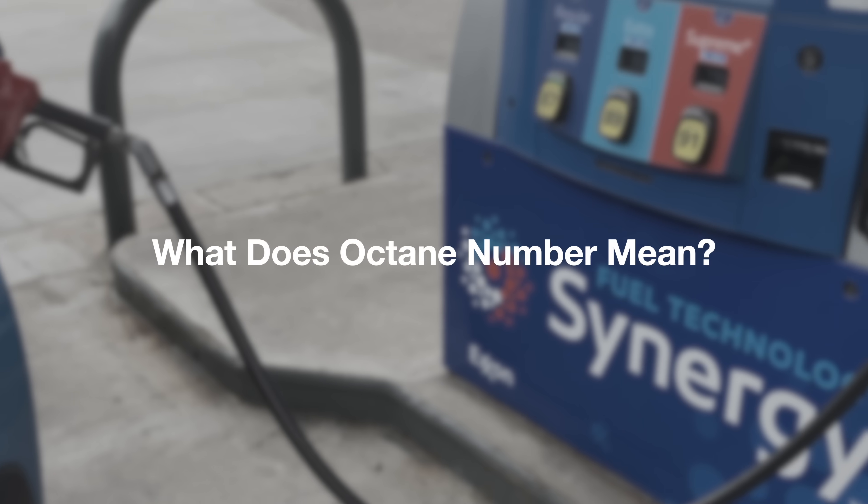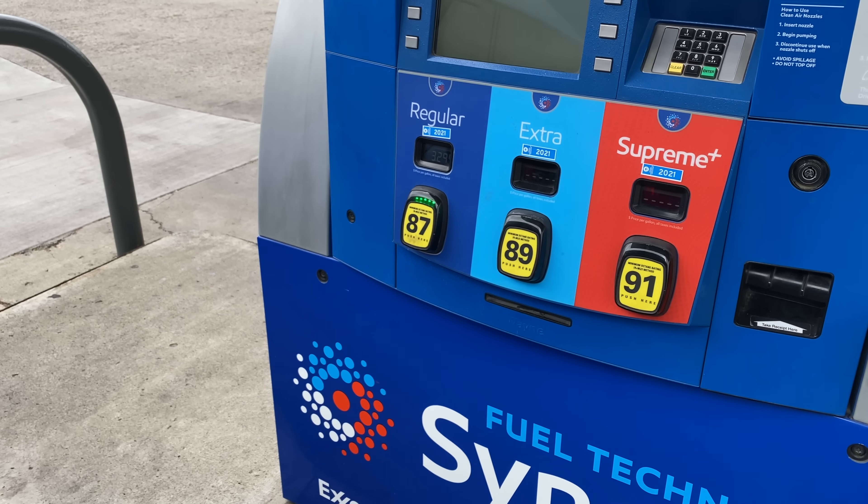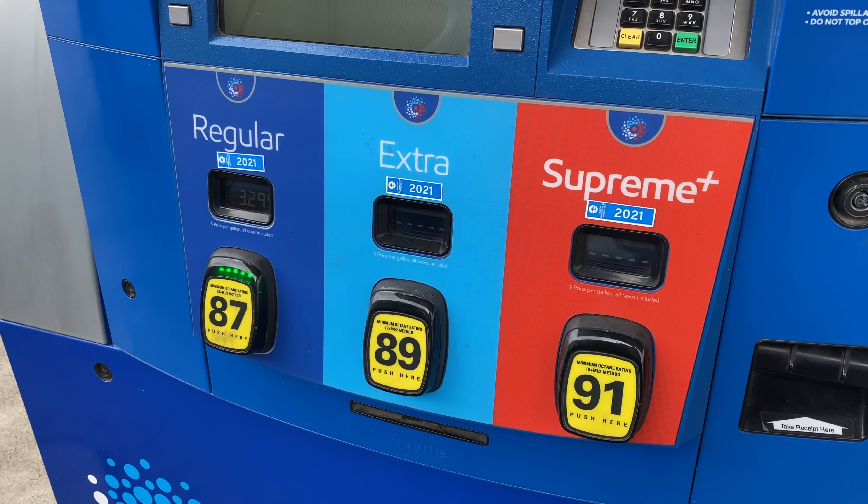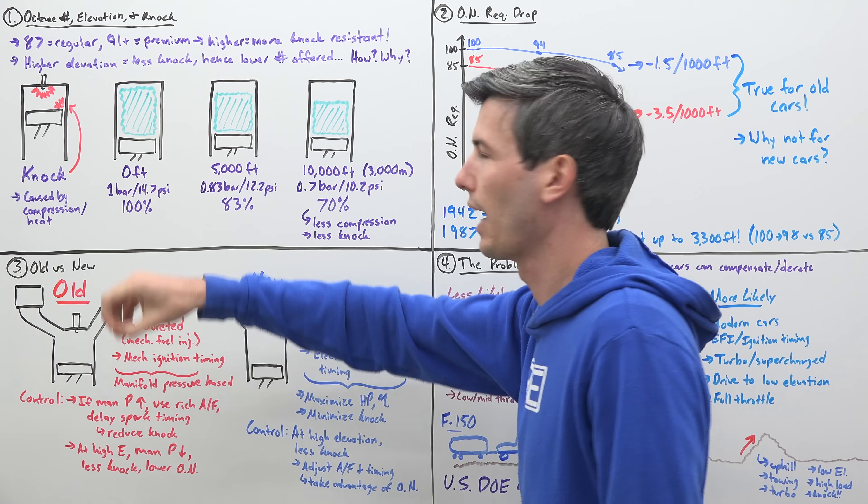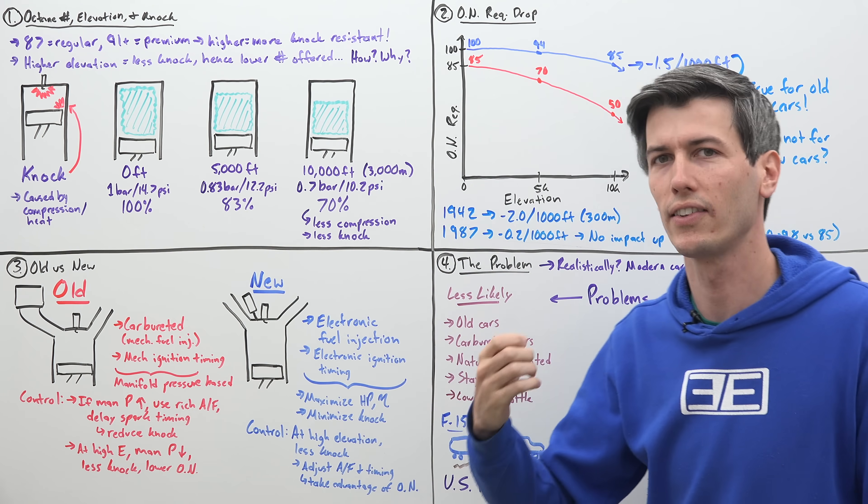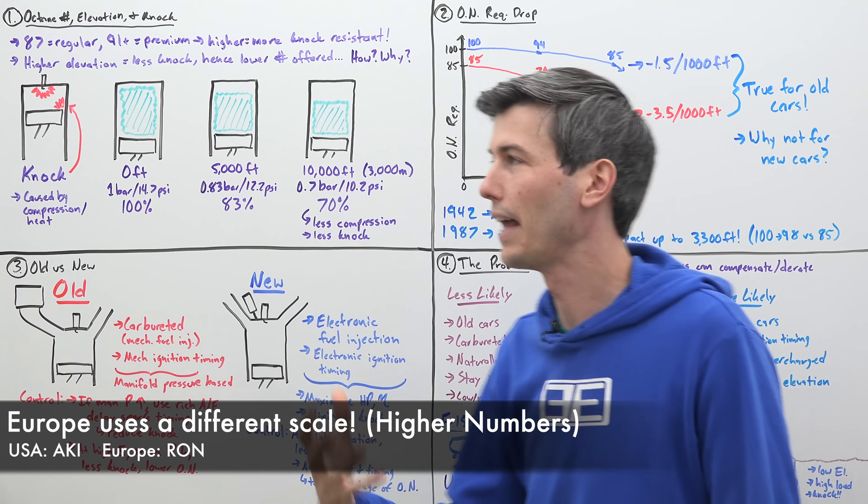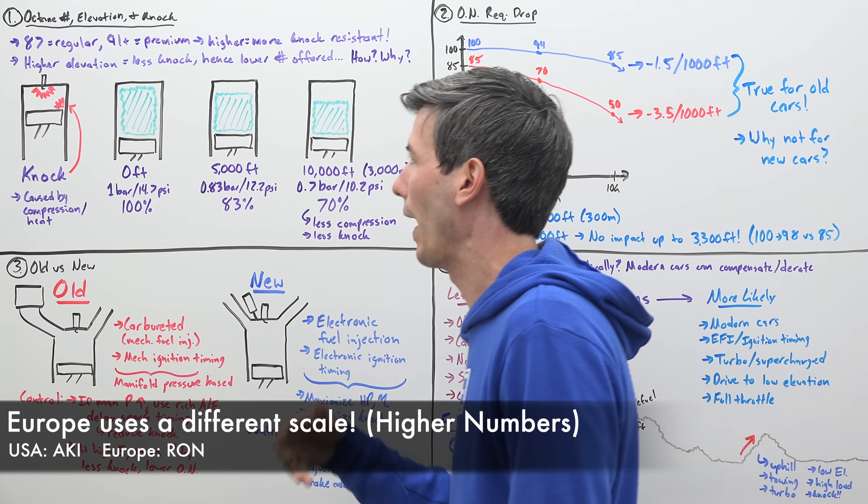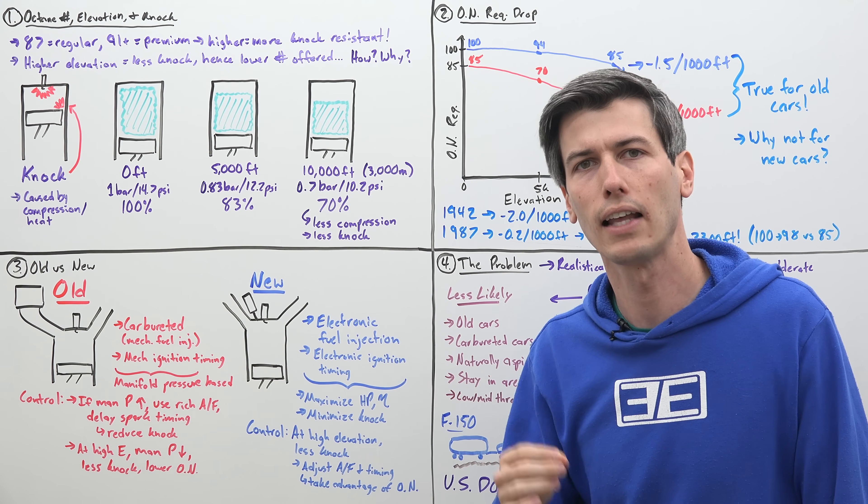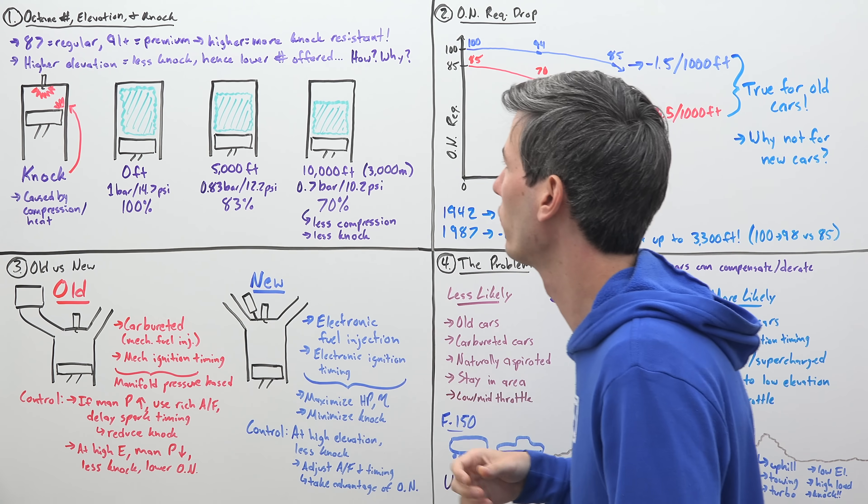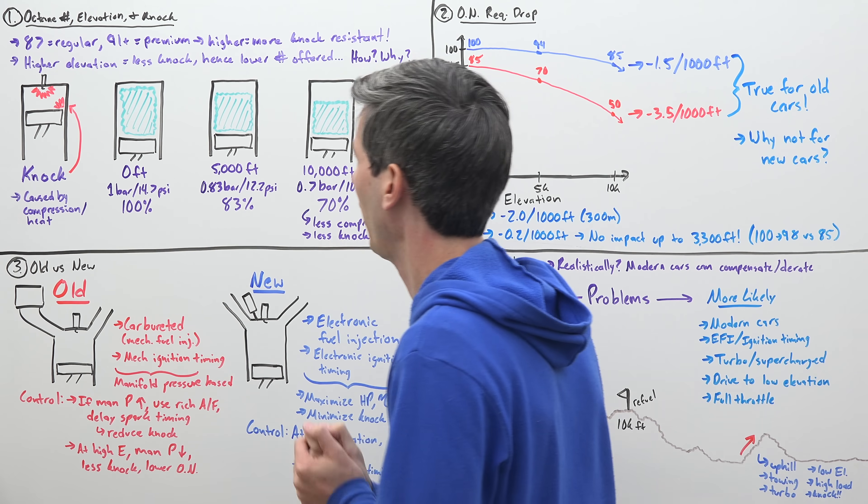What does this octane number mean? You'll see numbers like 87 for regular, 91 plus, it could be 93 for premium gas. This number is the octane rating and basically what it means is its resistance to knock. The higher the number, the more resistant to knock that fuel is. As you get to higher elevations, it's less likely that your engine will have knock, so they offer these lower octane numbers as the base regular gas.